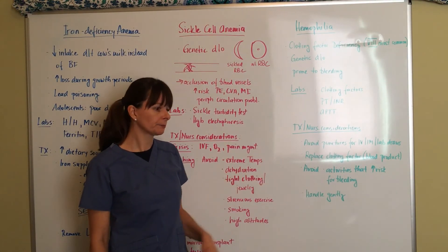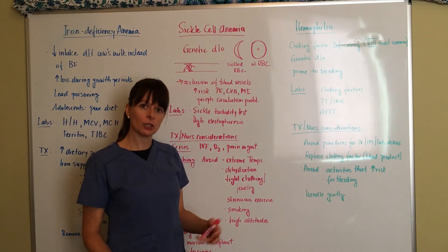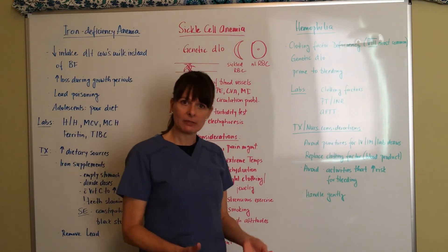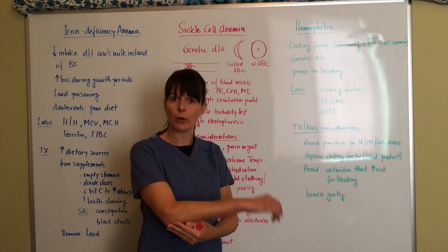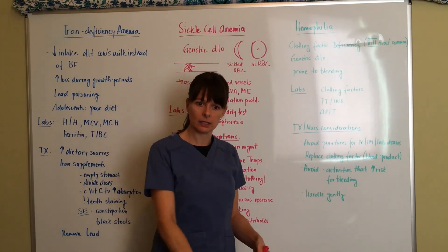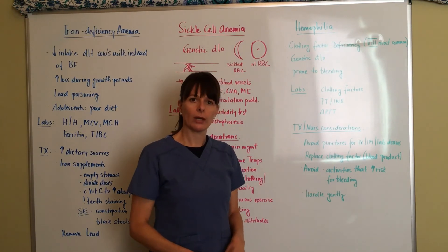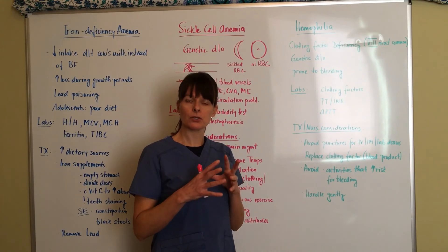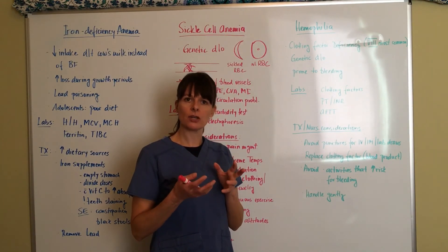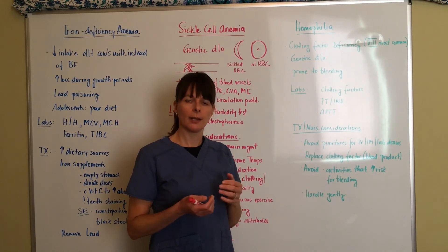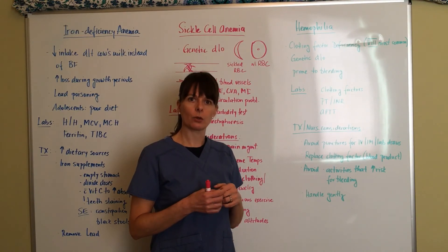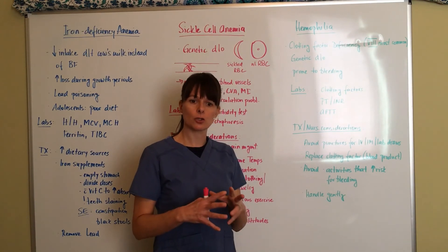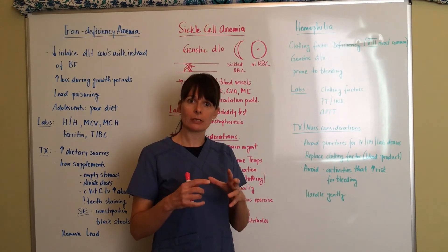Now for hemophilia, what can happen is children tend to play and run around and fall. Sometimes they fall and injure a joint, most likely a knee. What happens is that joint capsule on the inside kind of bursts and there's a little bit of bleeding. Generally it would cause a little bruising and swelling in a normal child, but in a child with hemophilia that can cause this joint to be extremely swollen.